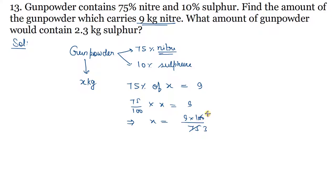So 75% of x equals 9. Solving this: 100 upon 75, that gives us 12 kg. So 12 kg is the amount of gunpowder which carries 9 kg nitre. This is the first answer.